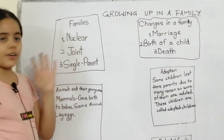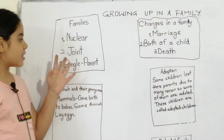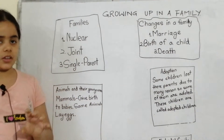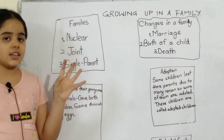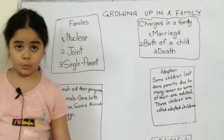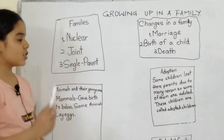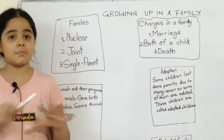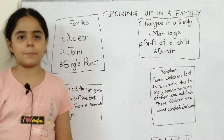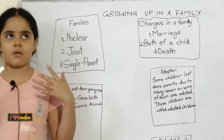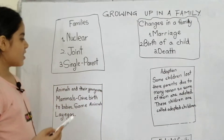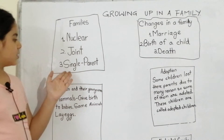The first type is nuclear family, the second is joint family, and the third is single parent family. In a nuclear family there are parents and children. In a joint family there are many family members, like grandparents, parents, cousins, aunts and uncles, and us.